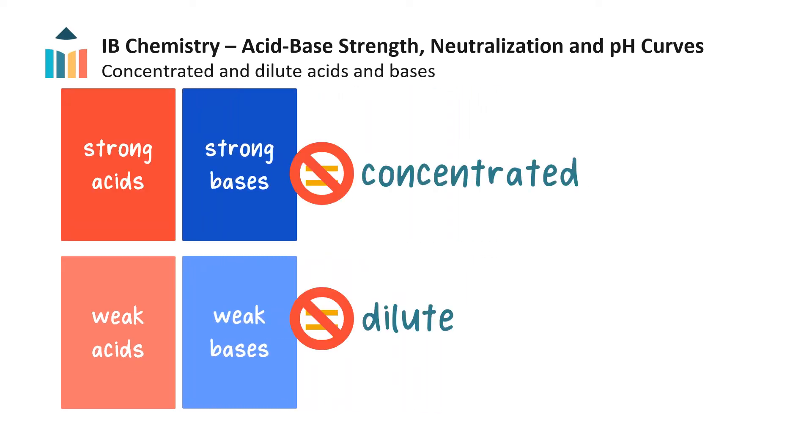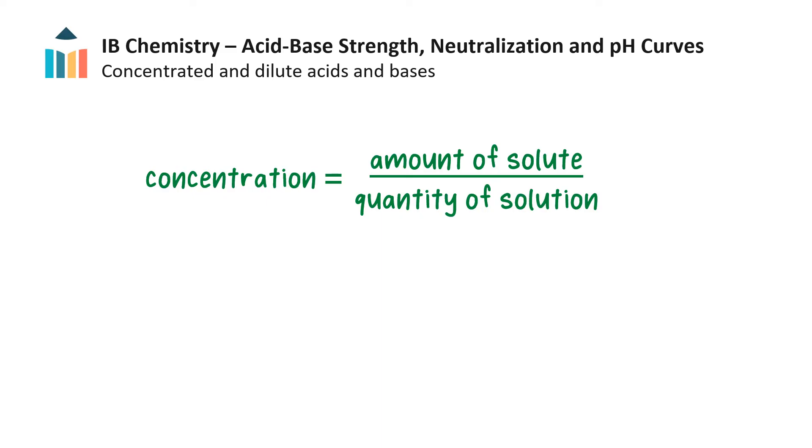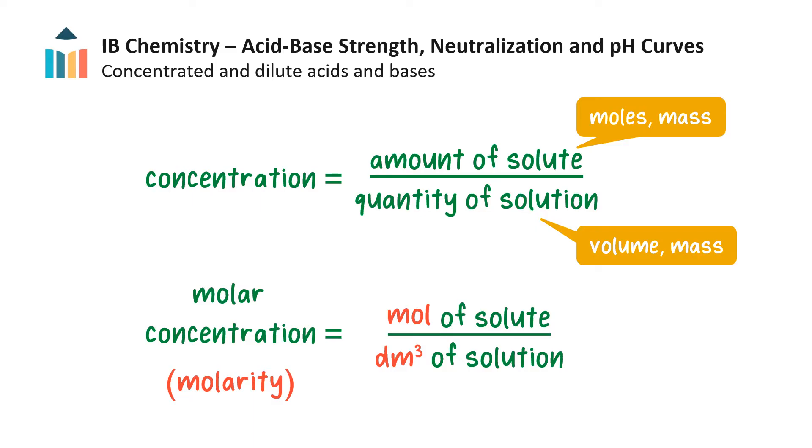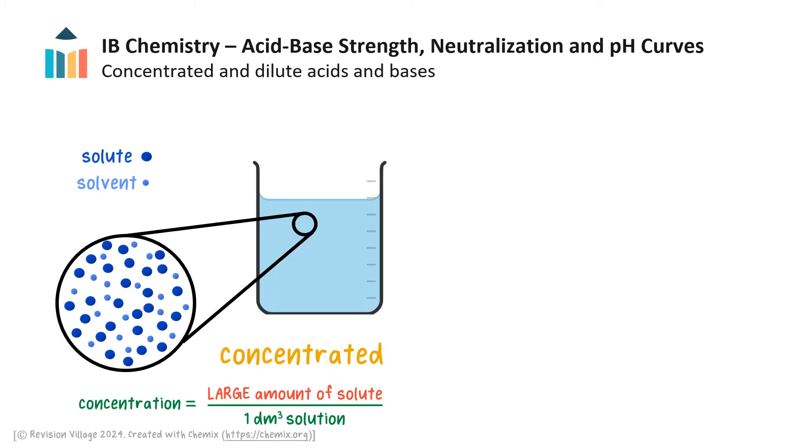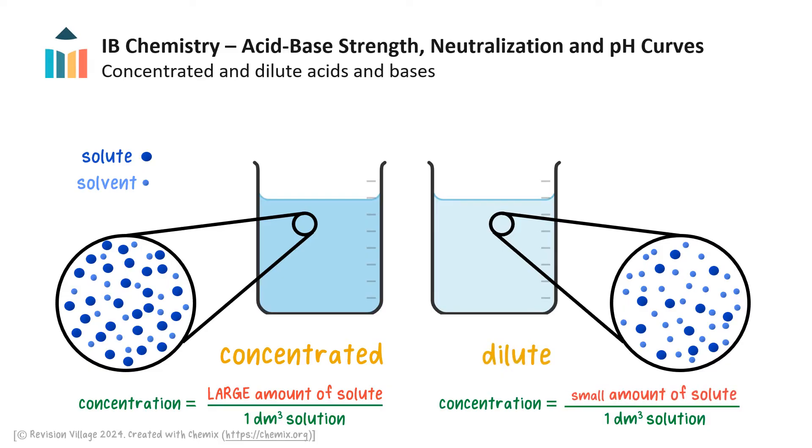We must not get confused and assume that a strong acid or base is concentrated and a weak acid or base is dilute. Concentration is a measure of the amount of solute in moles or mass, per unit quantity of solution, usually volume or mass. Chemists tend to use molarity, which is moles of solute per decimeter cubed of solution. The term concentrated means a high proportion of solute relative to a given volume of solution. And dilute refers to a small amount of solute in a given volume of solution. Any acid or base can be concentrated if a large quantity of it is placed in a small quantity of solvent. And any acid or base can be dilute if a small quantity of it is placed in lots of solvent.